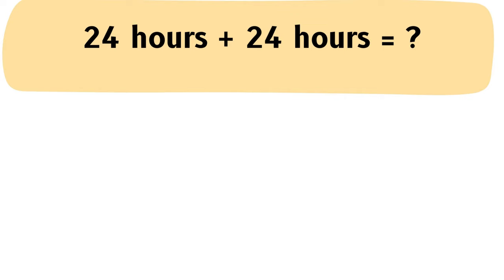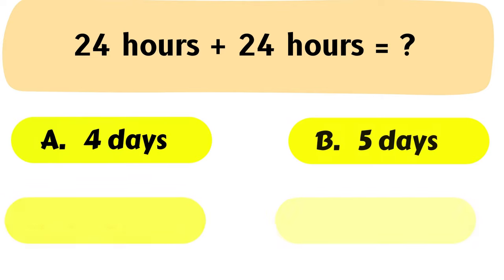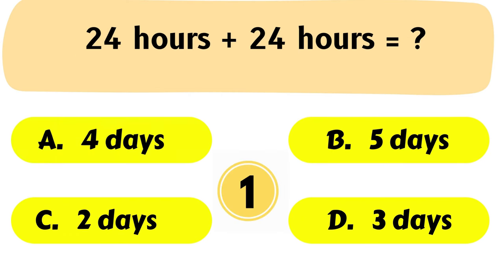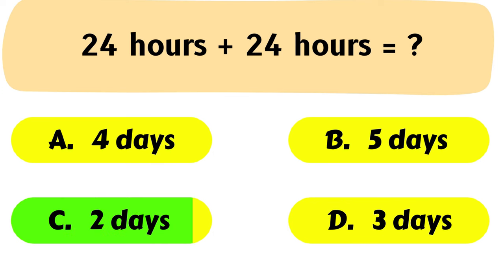Question No. 9: 24 hours plus 24 hours equals to? A. 4 days, B. 5 days, C. 2 days, D. 3 days. The correct answer is Option C: 2 days.